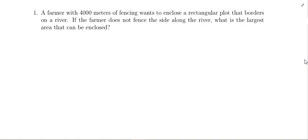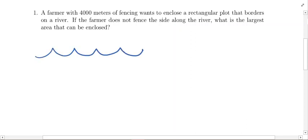Pause the video if you need to read through the problem as many times as you need so that you have a good understanding of what's going on. When you have a word problem like this, it is a really good idea to draw out what is going on. Basically you've got this farmer who has 4,000 meters of fencing and his plan is to enclose a rectangular plot, but that rectangular plot is bordering along a river. The farmer is not going to fence the side along the river, so we'll build the rectangular plot using fencing along the other three sides.